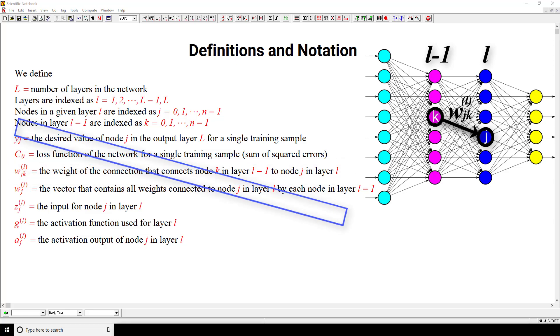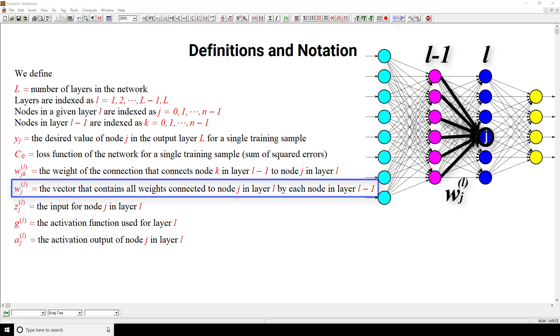Next, we define W sub j superscript small l. And this is the vector that contains all the weights connected to node j in layer l by each node in layer l minus 1.